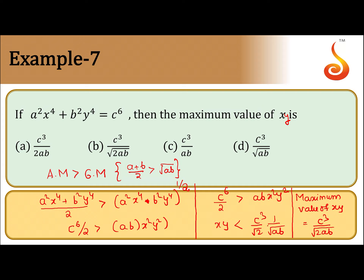From c⁶ / 2 > ab · x²y², taking the square root and reversing the inequality: xy < c³ / (√2 · √(ab)). So the maximum value of xy is c³ / √(2ab), which corresponds to option B.